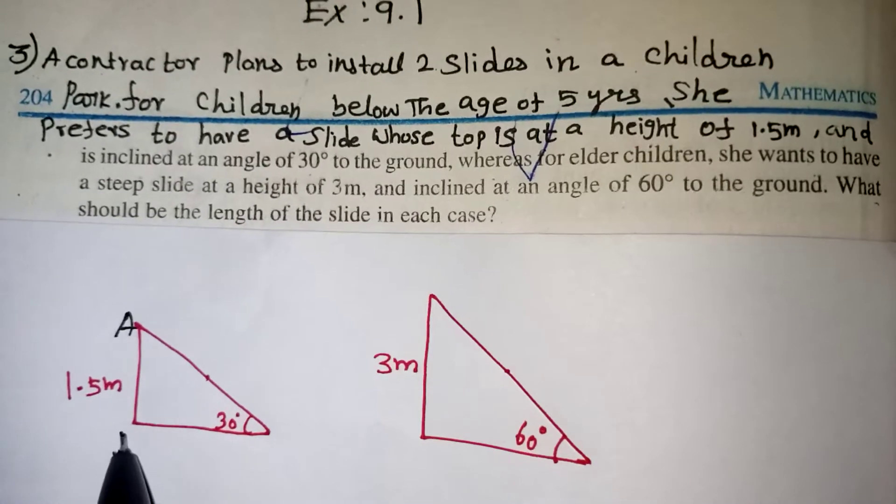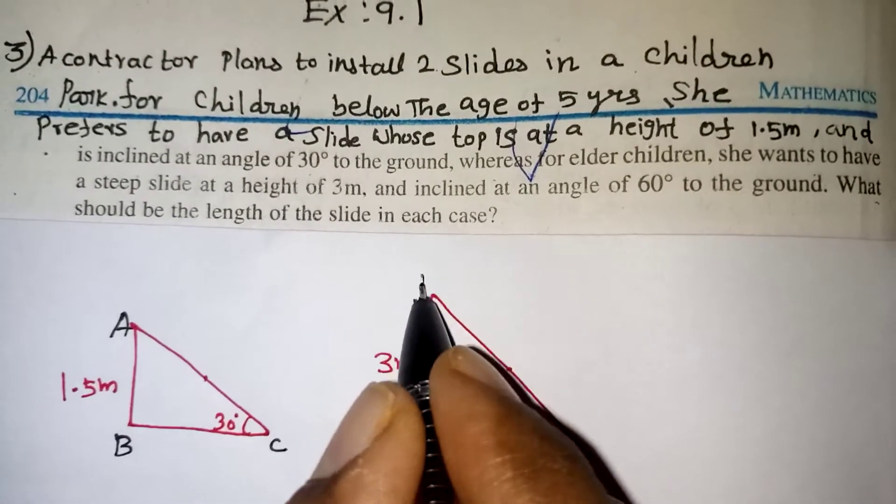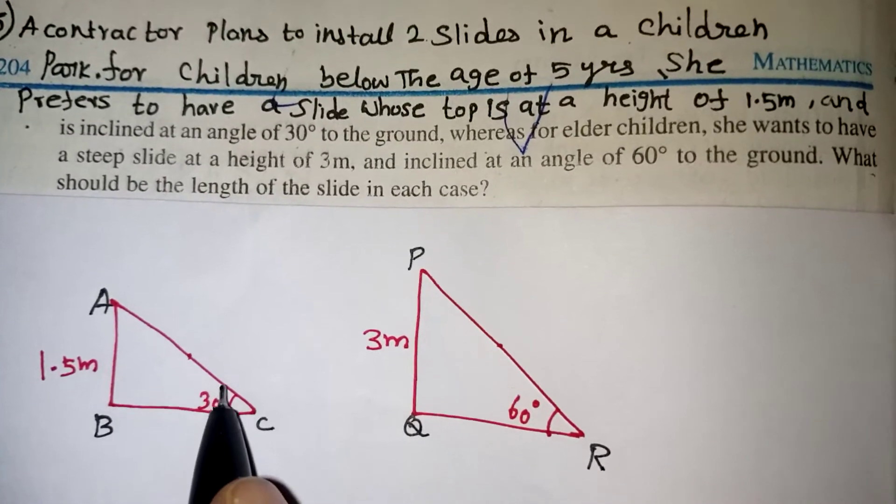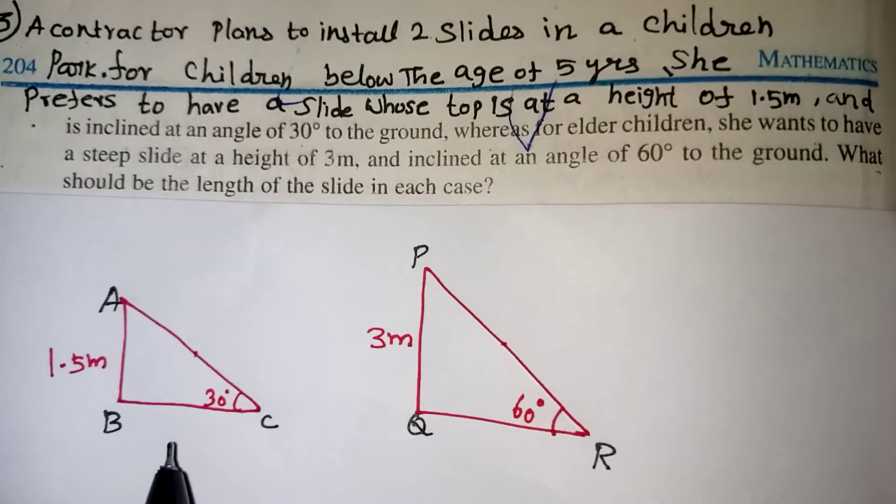So here let us take any variable. So here A, B, C. For this slide let us take P, Q and R. So our question is to find AC and PR. Now listen children.